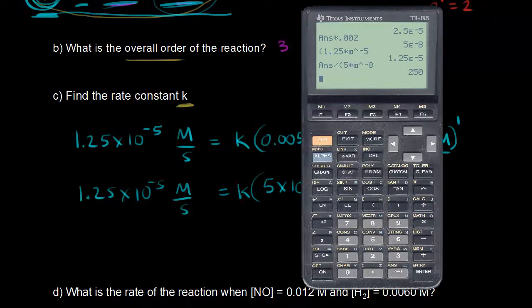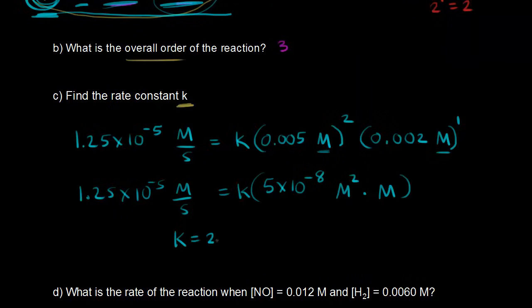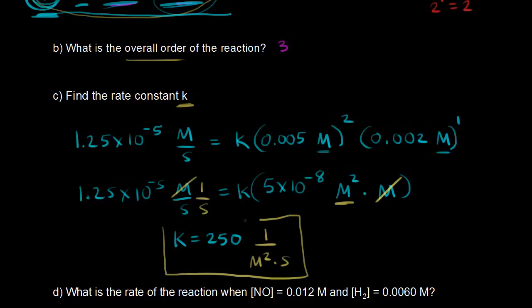K equals 250. For the units: on the left we have molar per second; on the right we have molar squared times molar. Canceling one molar, we get K = 250 per molar squared per second, or 1/(M²·s). This is the rate constant at 1280 degrees C — the rate constant is temperature-specific.